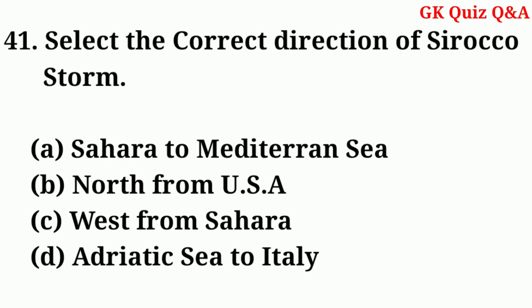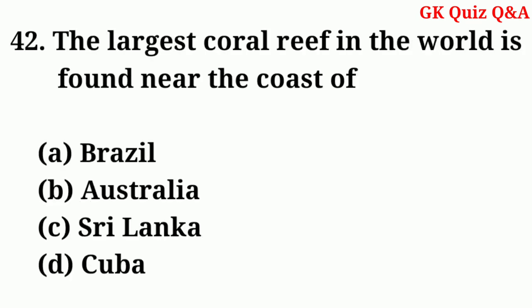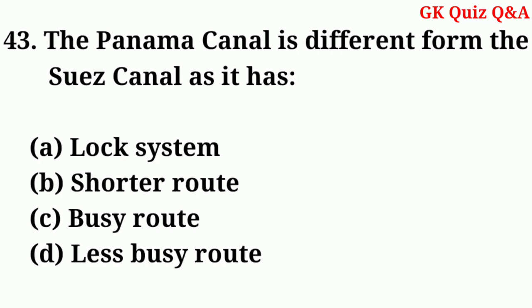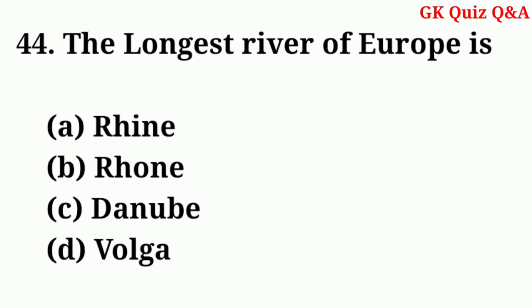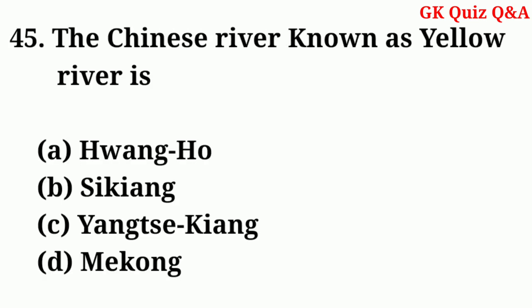The Sirocco wind blows from the Sahara to the Mediterranean Sea. The largest coral reef in the world is found near the coast of? Answer: B — Australia. The Panama Canal is different from the Suez Canal as it has? Answer: A — A lock system. The longest river of Europe is? Answer: D — Volga.